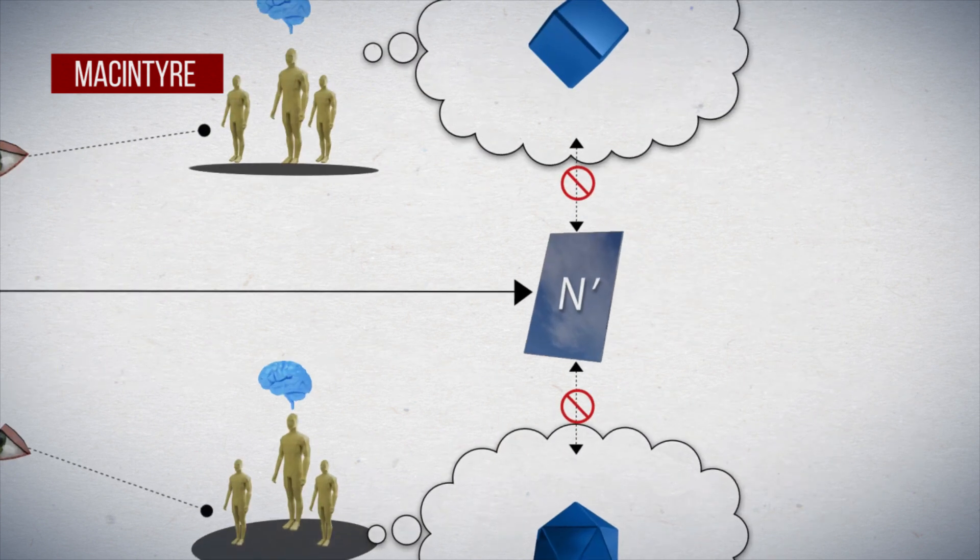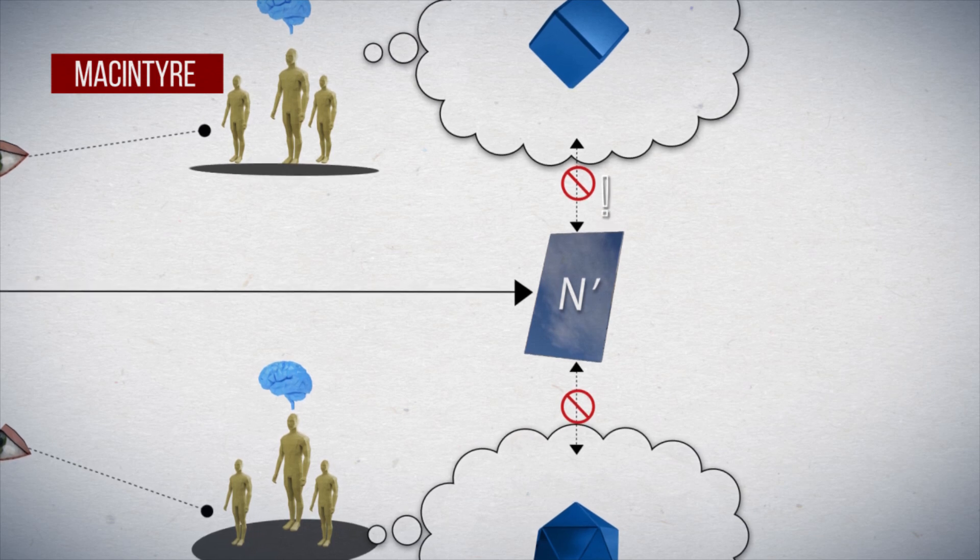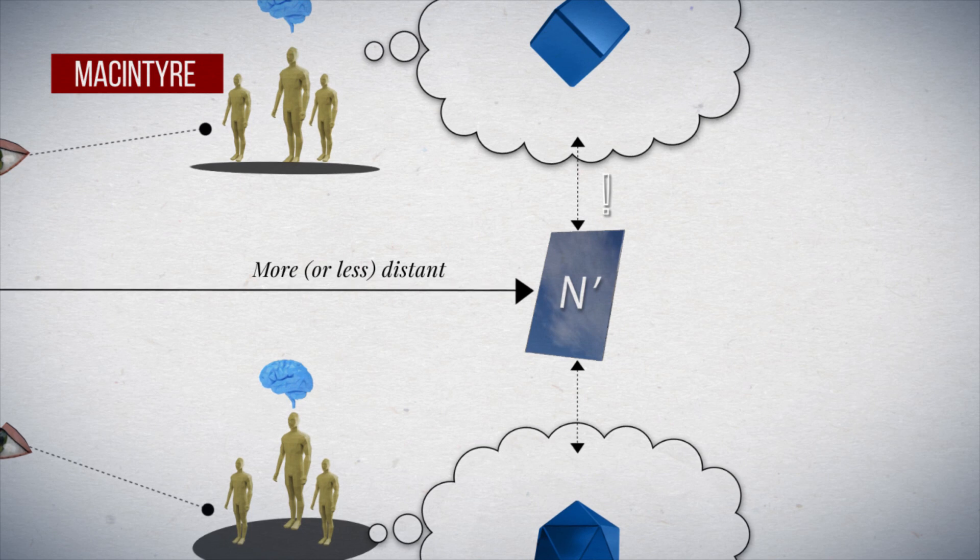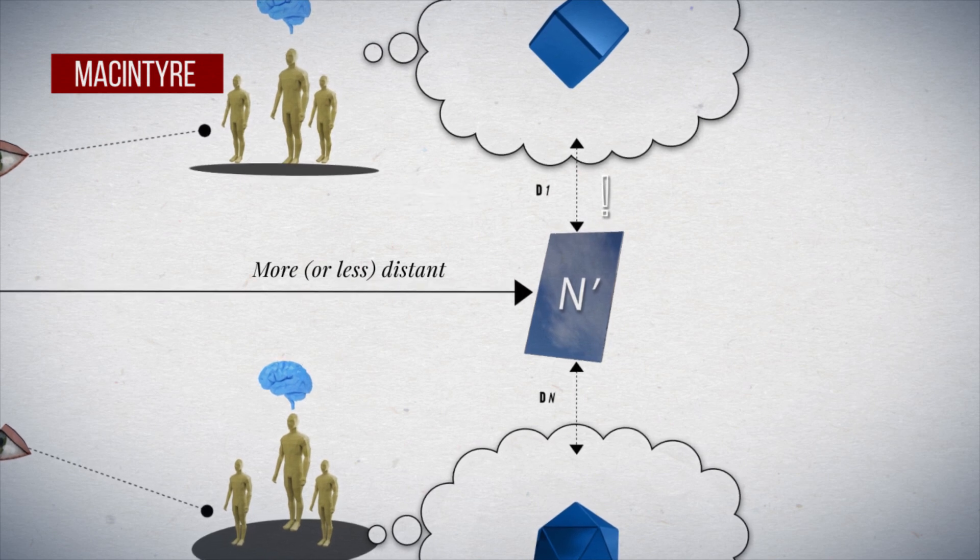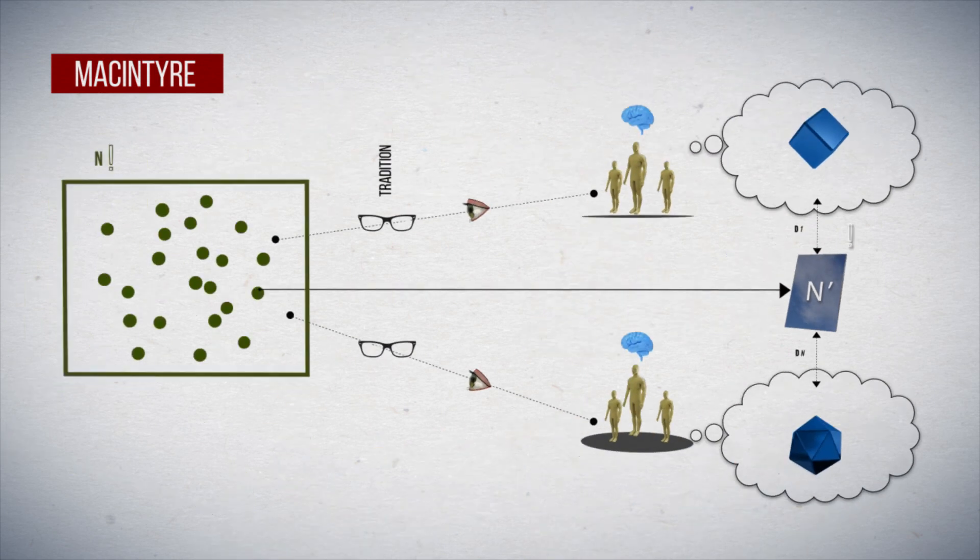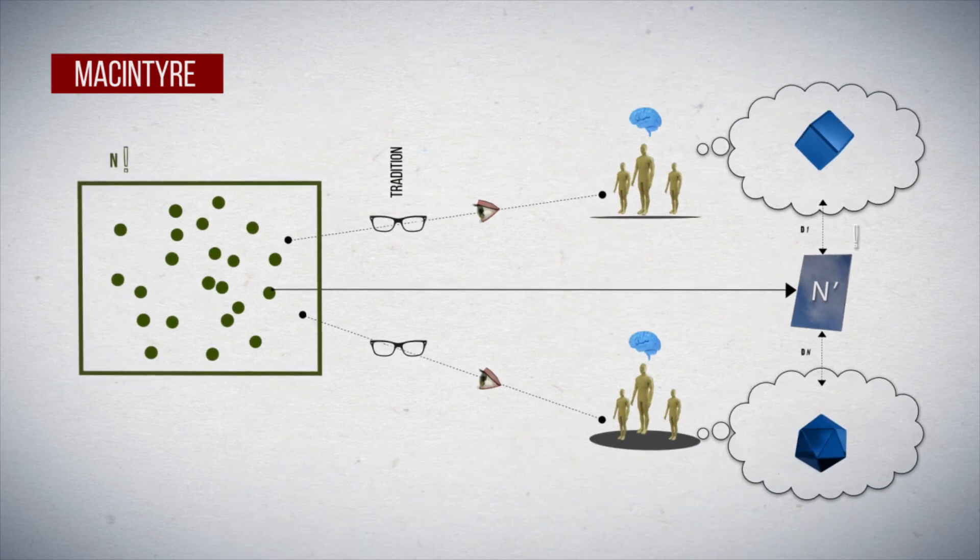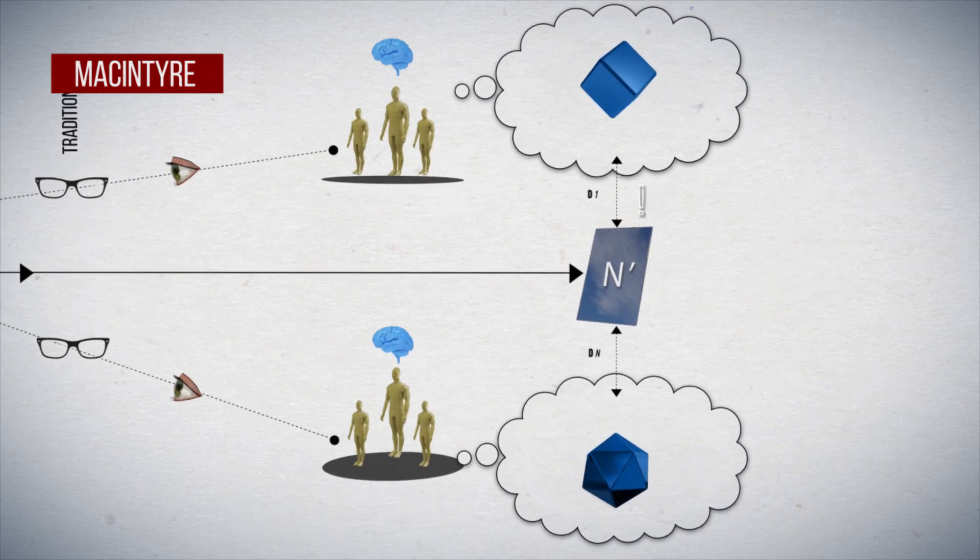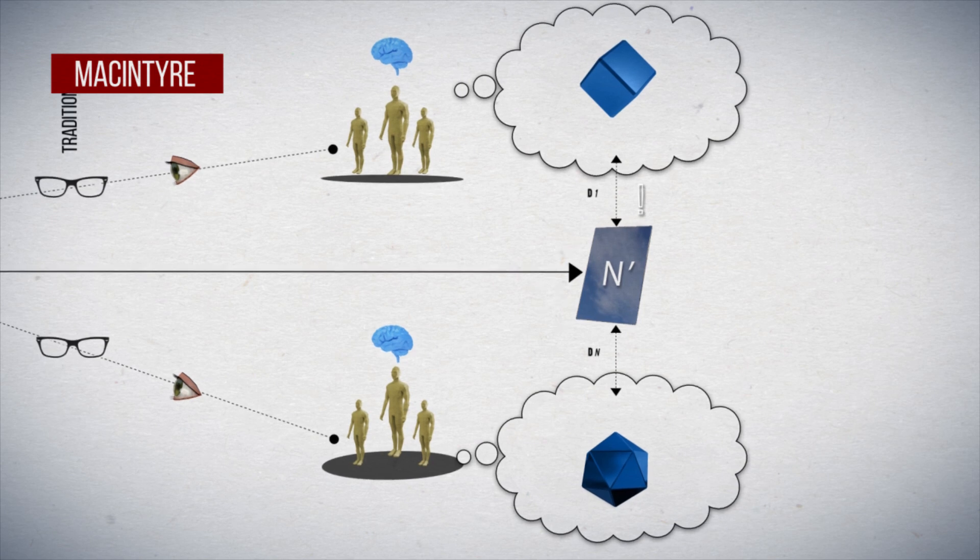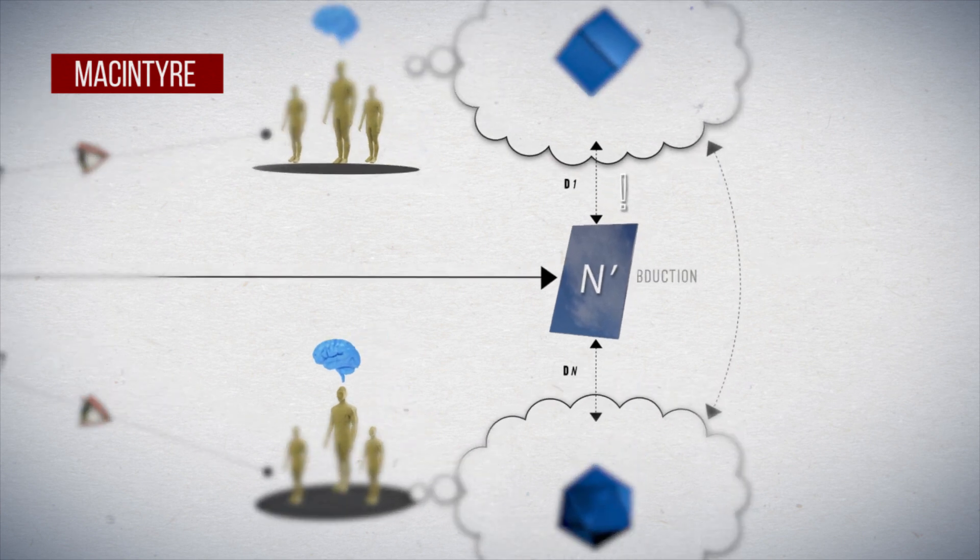However, this impossibility does not prevent traditional constructs to be considered more or less distant from what is known, although provisionally, as true knowledge about nature. Truth here used in the sense of correspondence. Thus, traditional constructs may be compared among themselves, toward the abduction to the best explanation.